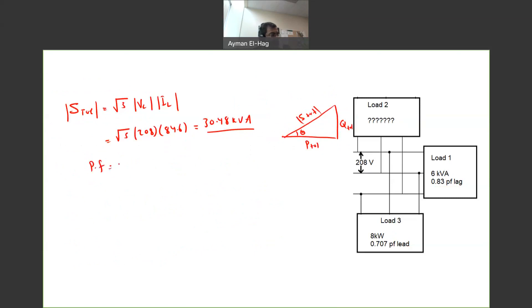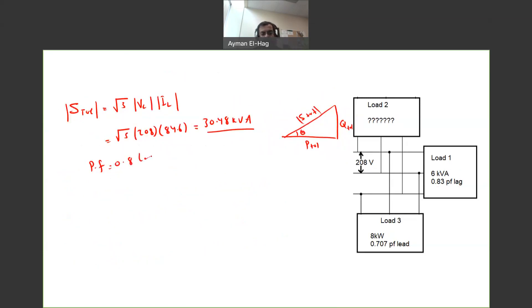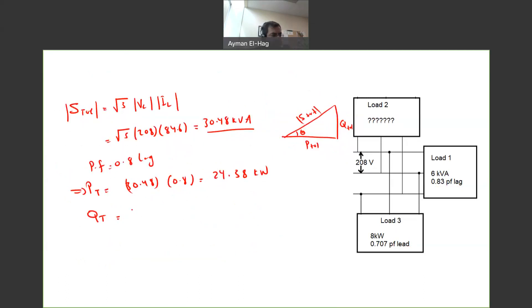The power factor total is given to us in the question, it equals 0.8 lagging. So your P total will equal 30.48 times 0.8 and will give me 24.38 kW. So this is your P total.